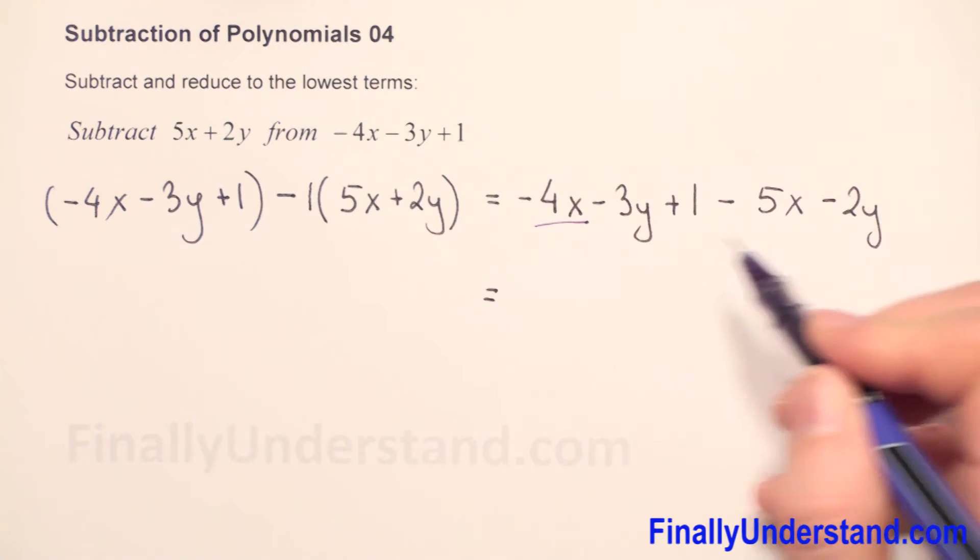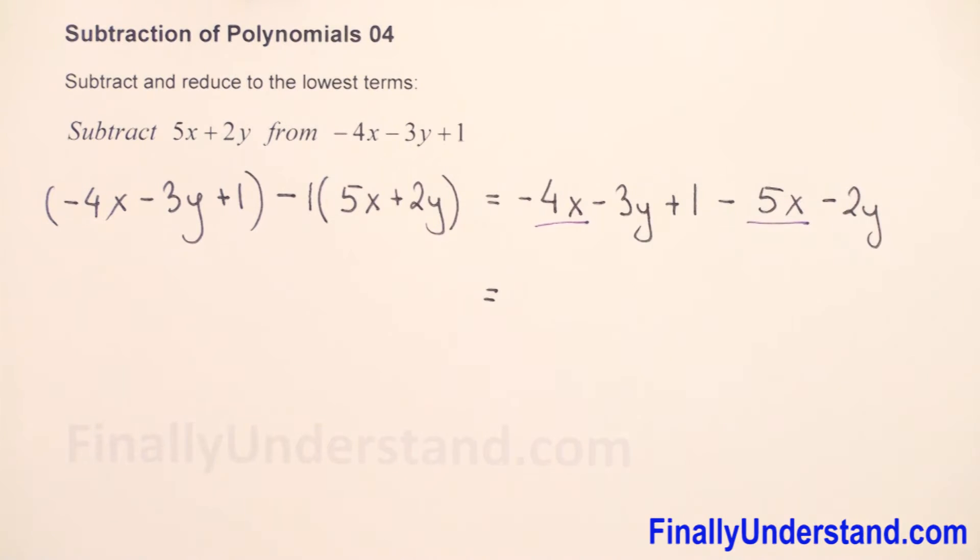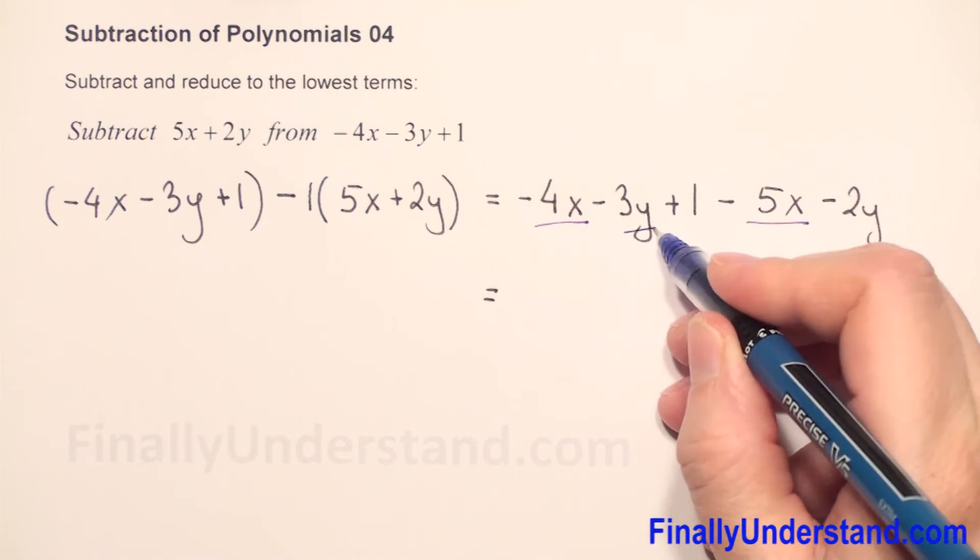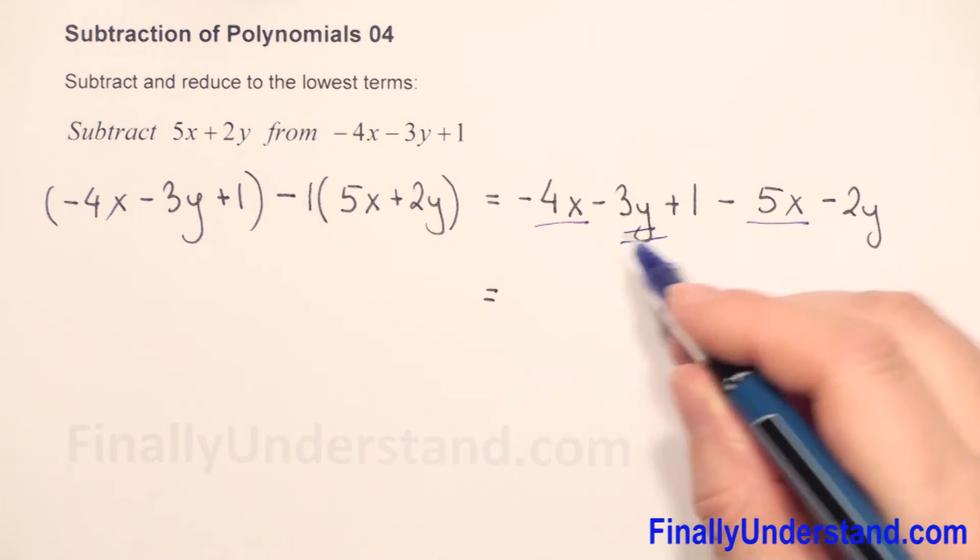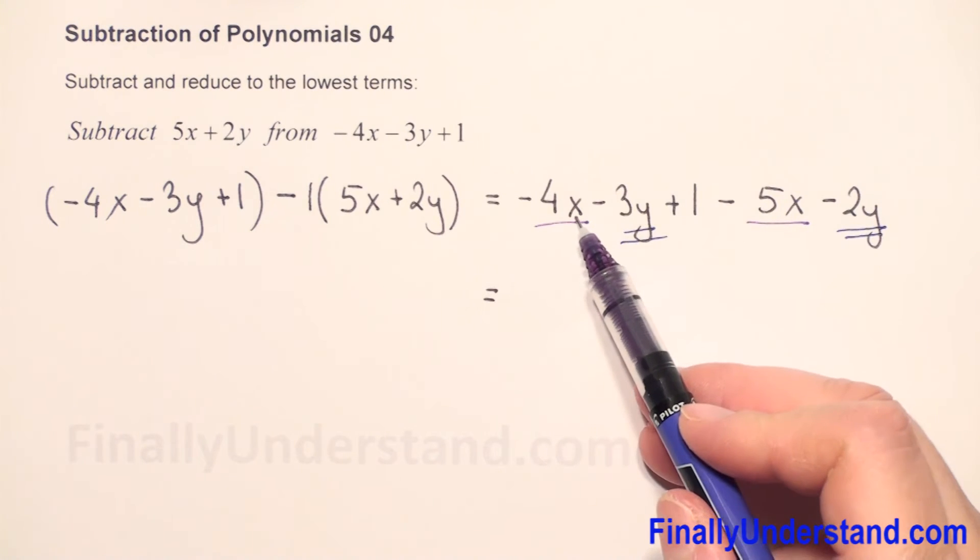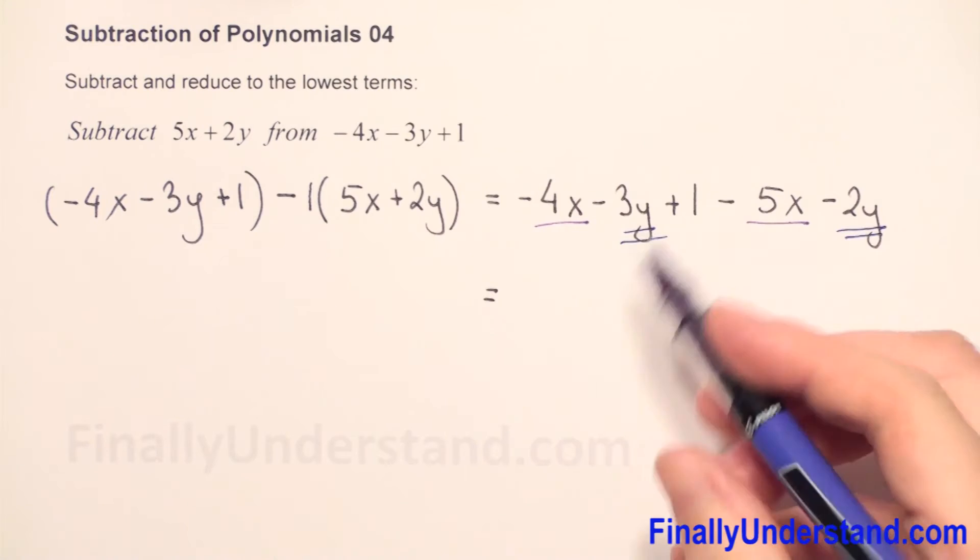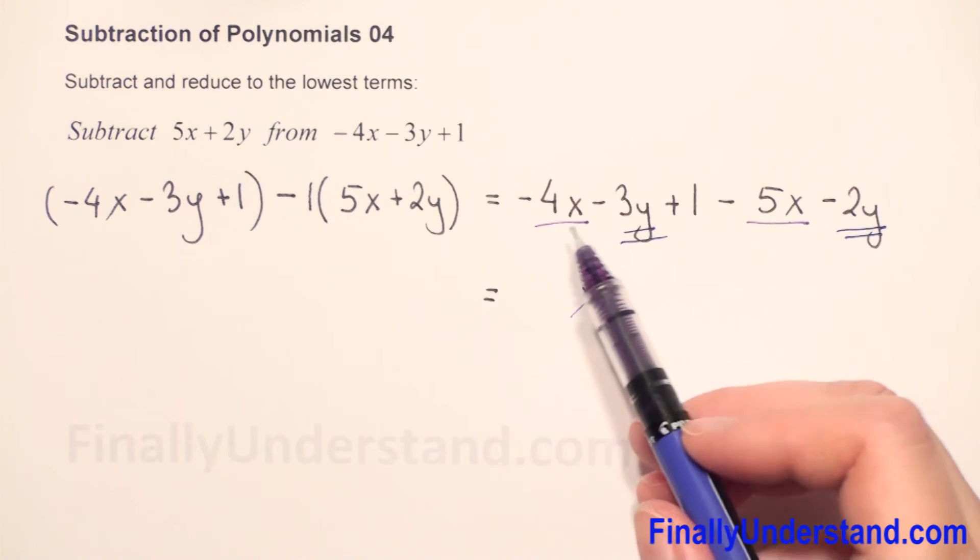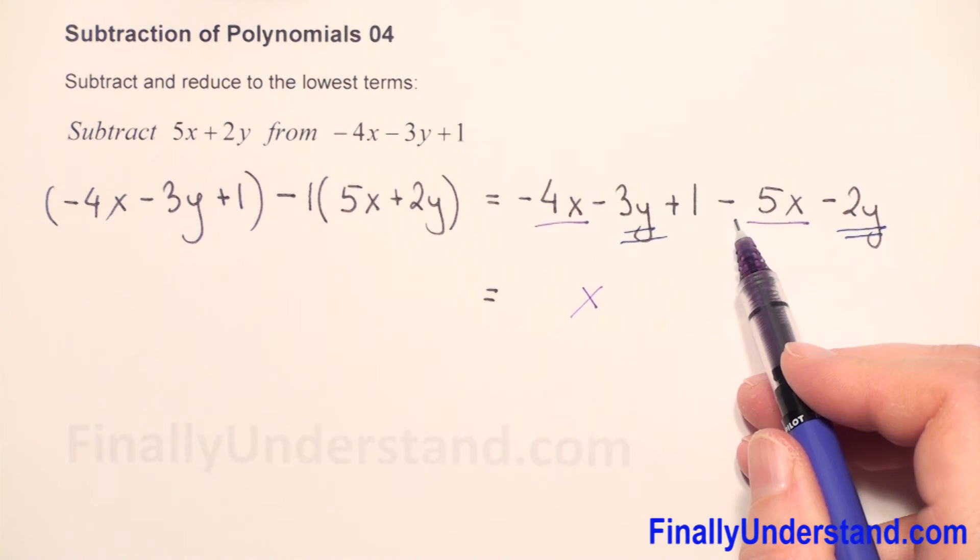We have negative 4x and negative 5x, and we have negative 3y and negative 2y. First we'll start with x. We copy the variable x, and we have negative 4 and negative 5.